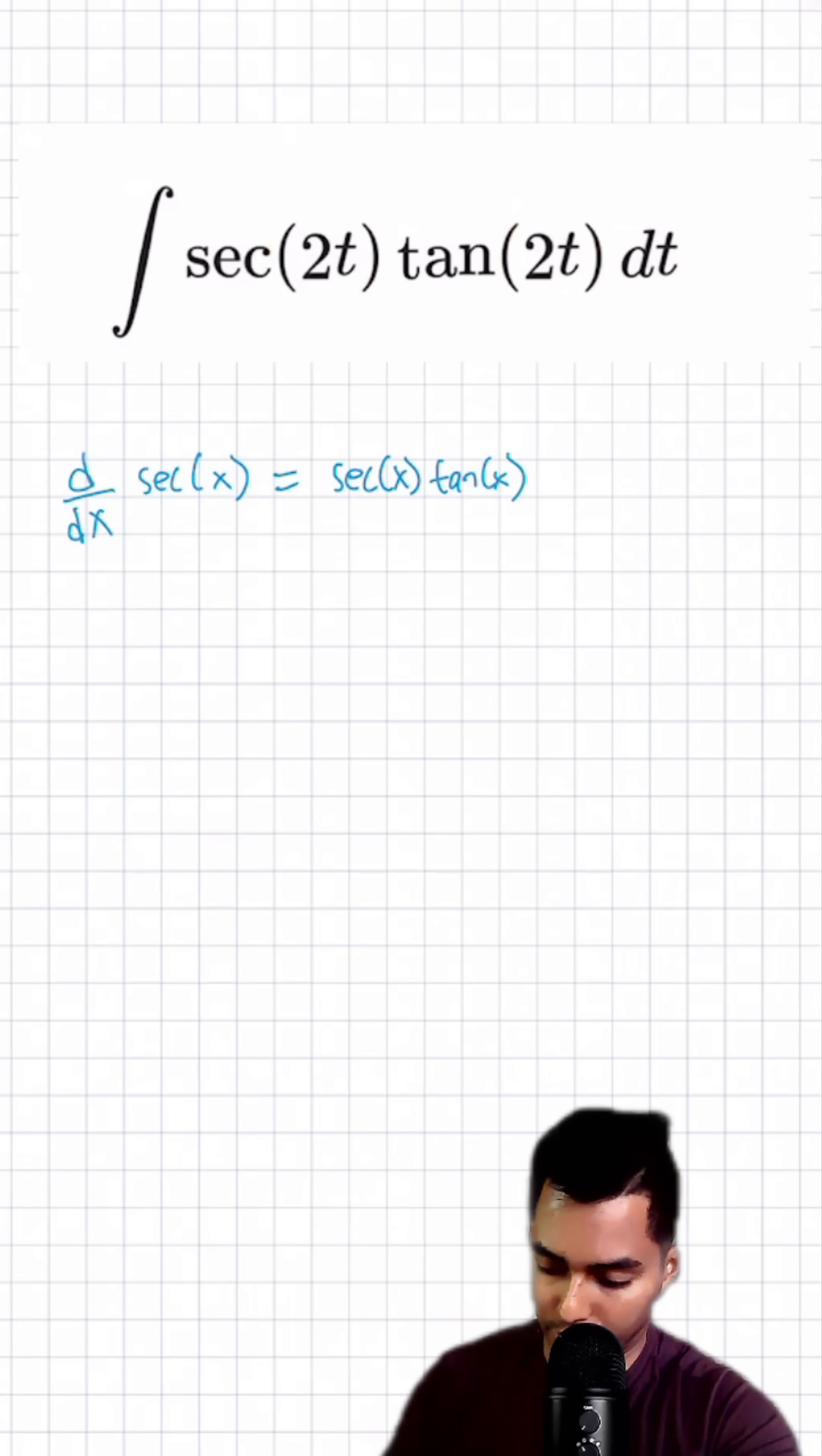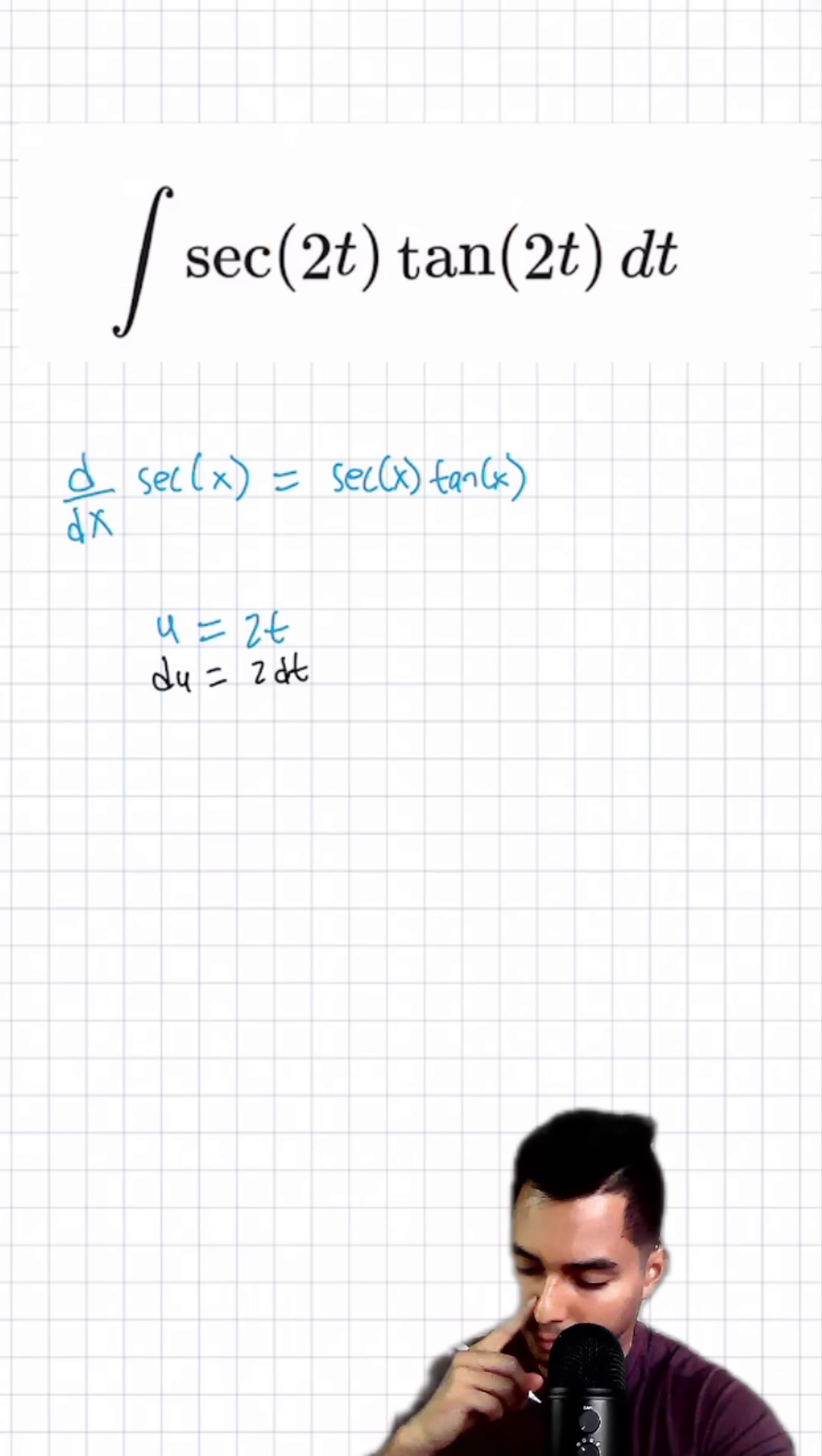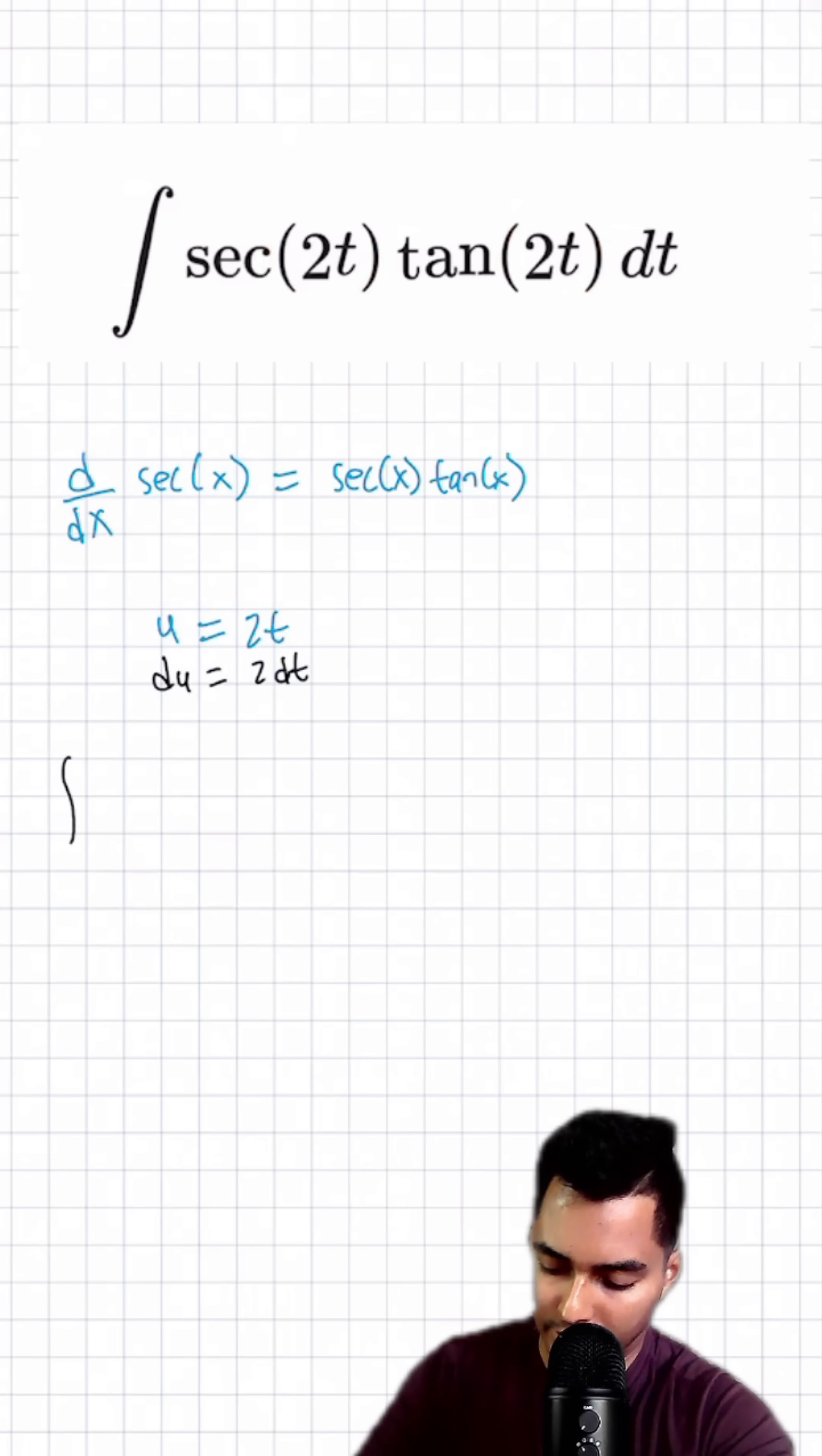The first thing I'm going to do for this integral is define a u substitution: u equals 2t, and take the derivative du is equal to 2 dt, and then I'm going to replace that into our integral here.